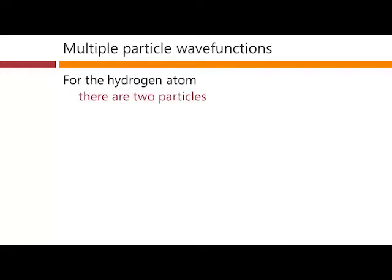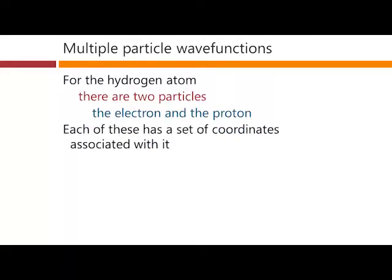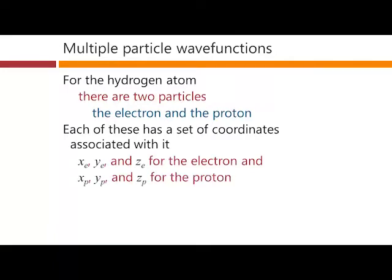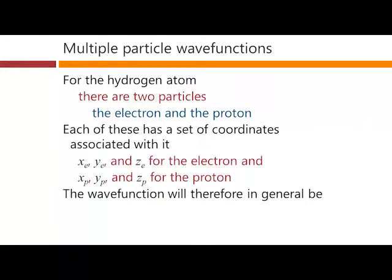For the hydrogen atom, there are two particles: the electron and the proton, and each of these has a set of coordinates associated with it. So we have x, y, and z coordinates for the electron, indicated with the subscript e, and x, y, and z coordinates for the proton, indicated with the subscript p. The wave function will therefore, in general, be a function of all six of these coordinates.